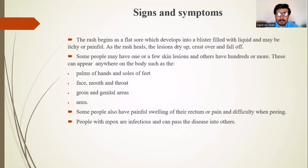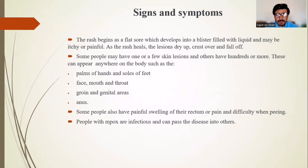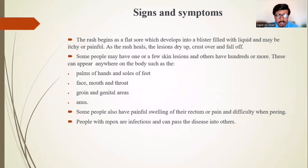The rash begins as a flat sore which develops into a blister filled with liquid and may be itchy or painful. As the rash heals, the lesions dry up, crust over, and fall off. Some people may have one or a few skin lesions while others have hundreds or more. These can appear anywhere on the body such as palms of hands, soles of feet, face, mouth, throat, groin, and genital areas.